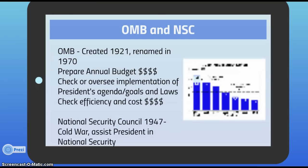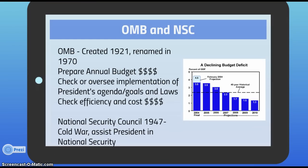The Office of Management and Budget dates to 1921, was moved to the executive office of the president in 1939, and received its current name in 1970. The OMB assists the president in preparing an annual budget, performs a central legislative function ensuring the priorities of the 15 departments and 140 agencies align with the president's program, and monitors implementation of programs to ensure efficiency and cost-effectiveness.